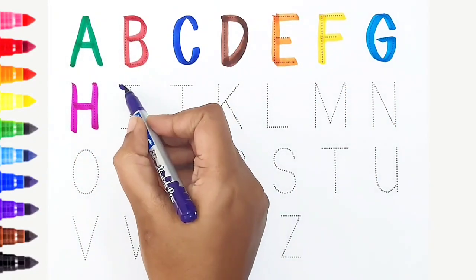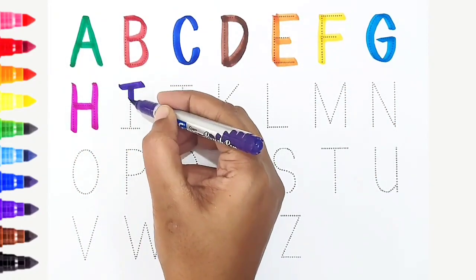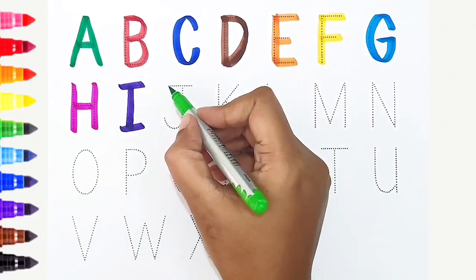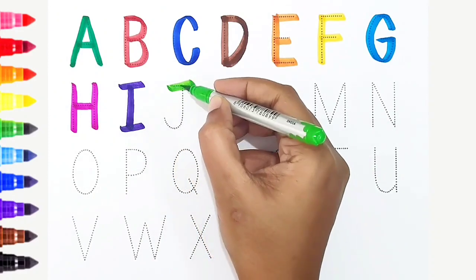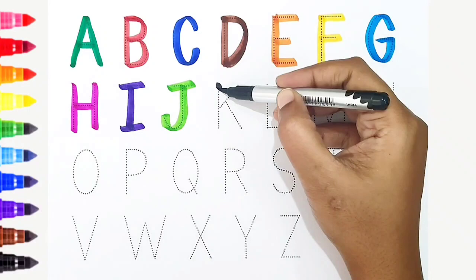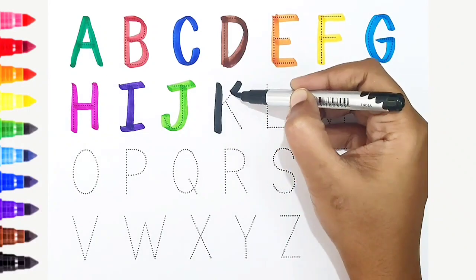I, violet color. I is for ice cream. J, light green color. J is for jug. K, black color. K is for kangaroo.